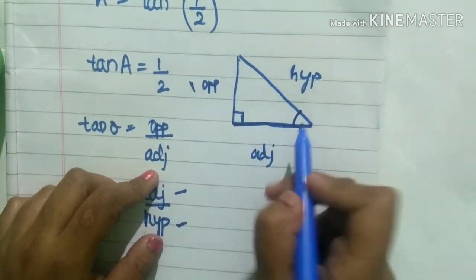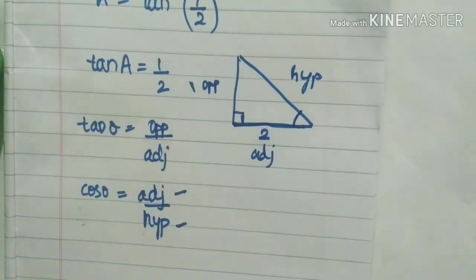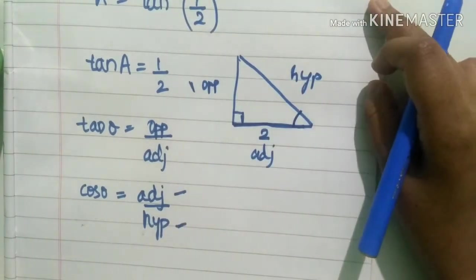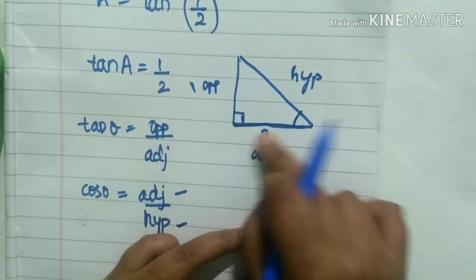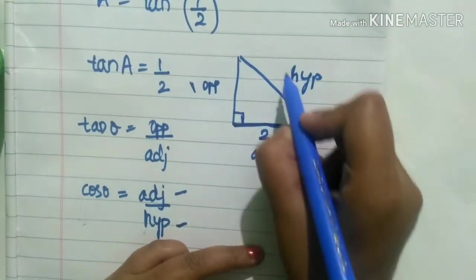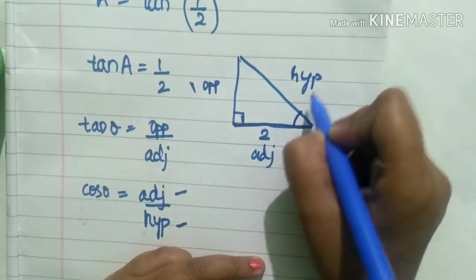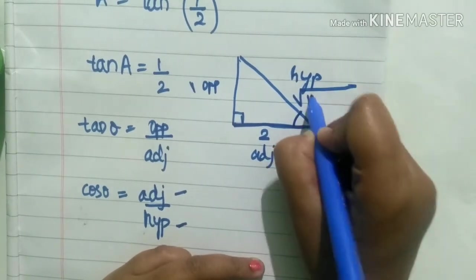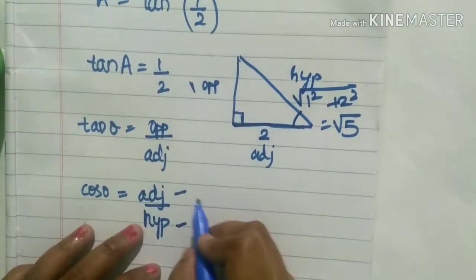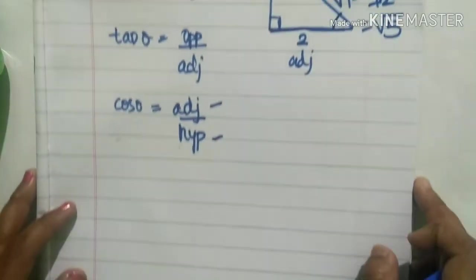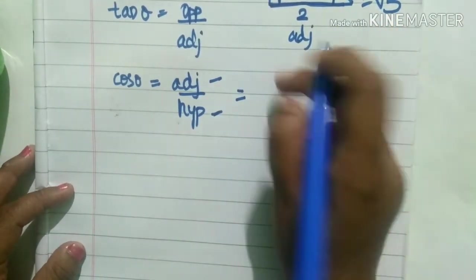Since tan equals 1 by 2, the opposite side is 1 and the adjacent side is 2. We have to find the hypotenuse using Pythagoras theorem, which states that the square of the hypotenuse equals the sum of the squares of the other two sides. So hypotenuse squared equals 1 squared plus 2 squared, giving hypotenuse equal to root 5. Therefore adjacent is 2 and hypotenuse is root 5.